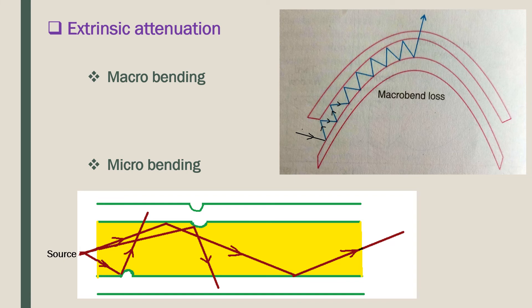A macro bend is a large scale bend that is visible. When a fiber is bent through a large angle, strain is placed on the fiber along the region that is bent. The bending strain will affect the refractive index and the critical angle of the light ray in that specific area. As a result, light traveling in the core can refract out and the loss occurs.